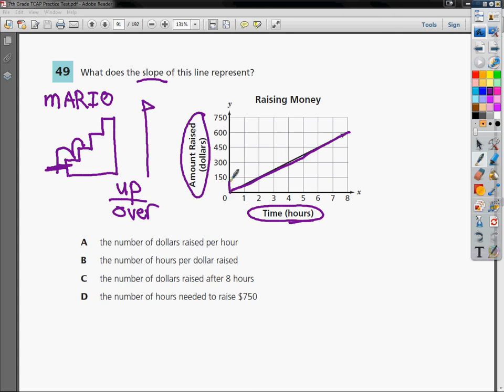Now in this case, when I go up, I'm talking about dollars. When I go over, I'm talking about hours. So I'm going to look for a statement that sort of mimics what I've written on the board. A says the number of dollars raised per hour, and you know, that seems reasonable, because it has dollars on top and hours on the bottom, and that word per here generally is indicative of the idea that I'm going to make this kind of statement.